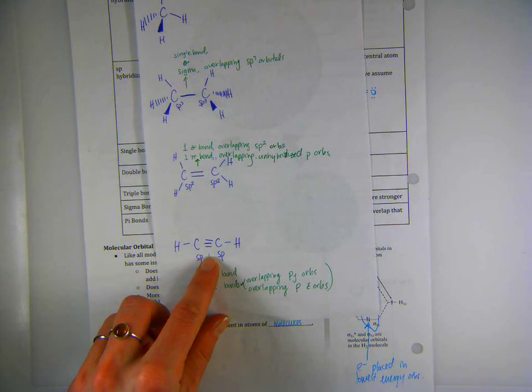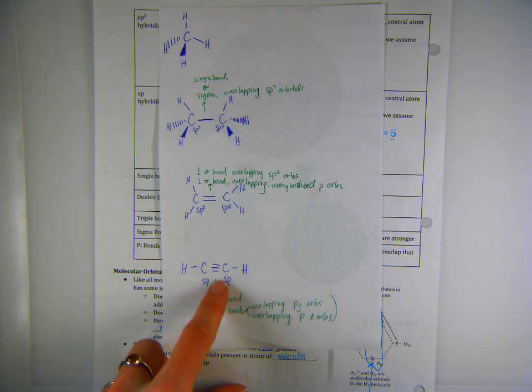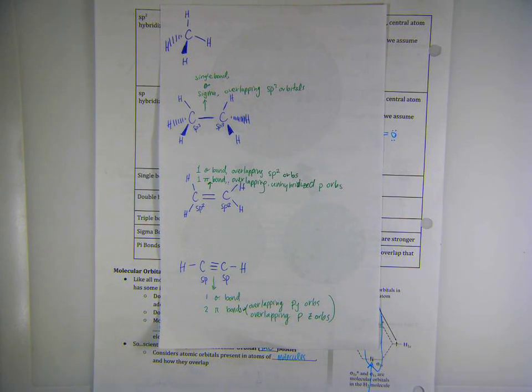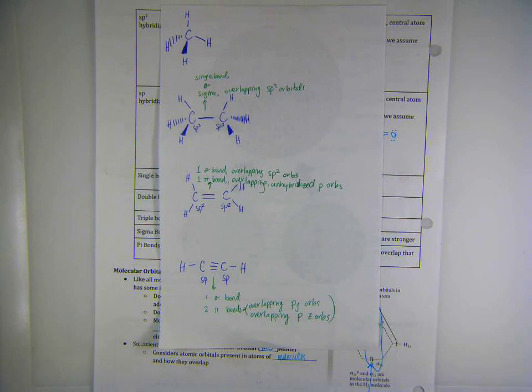So maybe you're thinking, why is a triple bond stronger than a single bond? But remember, the triple bond has the sigma bond, but it has the two pi bonds in addition. So even though the pi bonds themselves are less stable than a single bond, than the sigma bonds, in total, there is more stability with the triple bond.